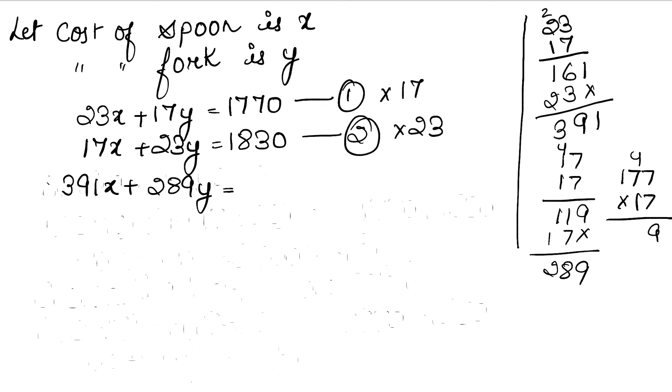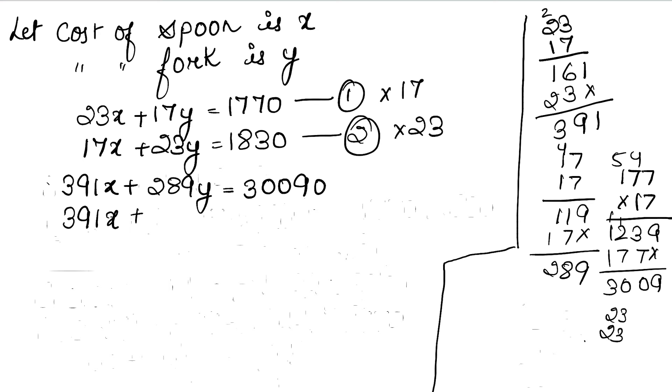7 times 7 is 49, carry 4. This gives 30090. Now for equation 2 times 23: 23 into 17 is 391x plus 23 into 23 is 529y. Calculating 183 into 23: 3 times 3 is 9, 3 times 8 is 24 carry 2, 3 times 1 is 3 plus 2 is 5. Then 2 times these digits. This gives 529y equals 42090.